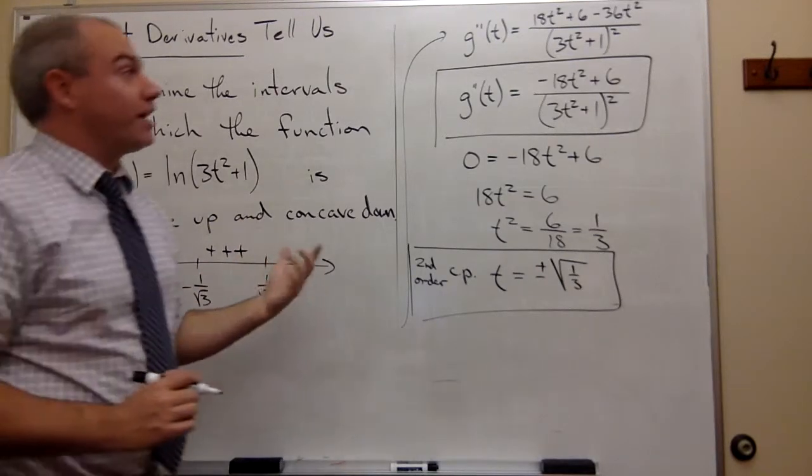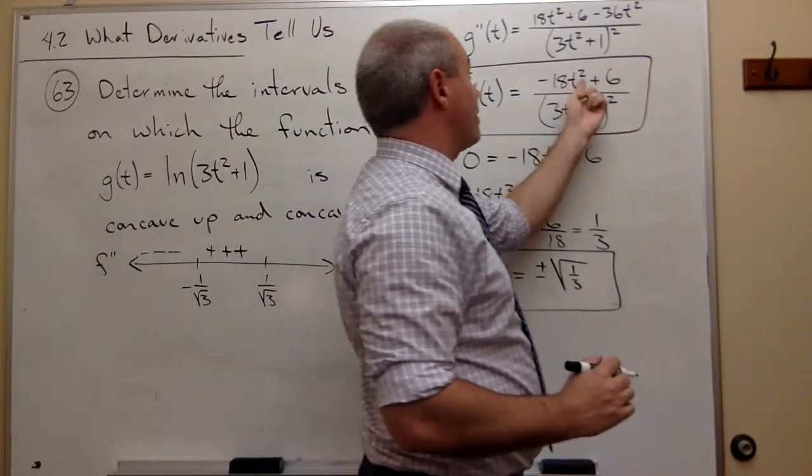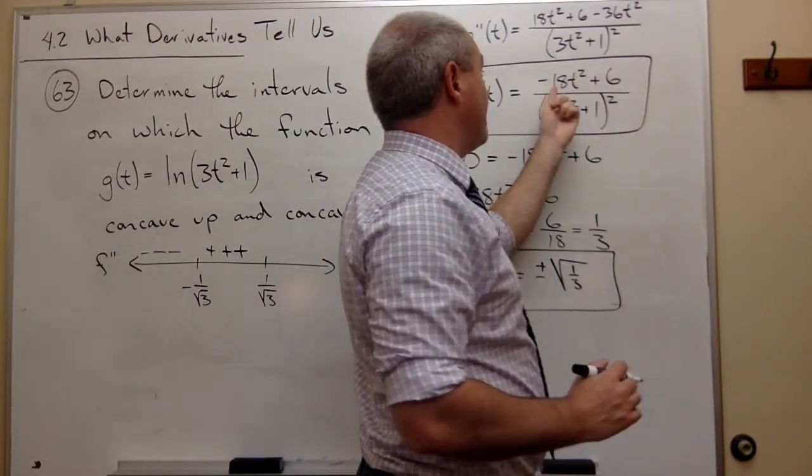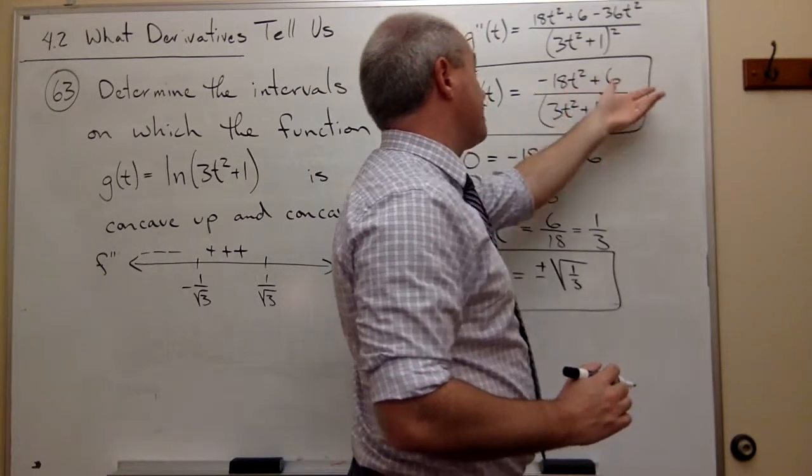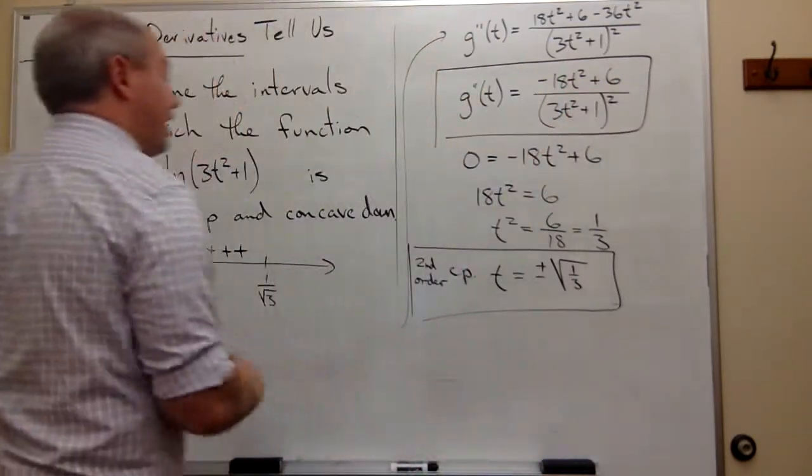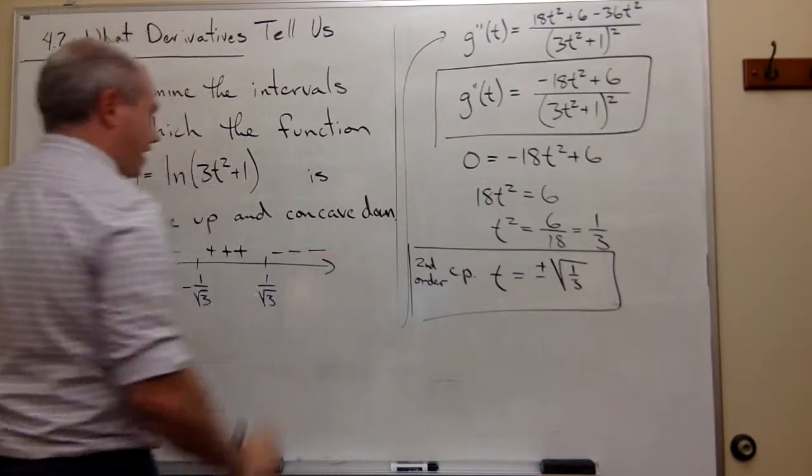Over here, let's take something like 10. 10 squared is 100, times -18 is -1,800, plus 6 is a very big negative number. So we get negatives.